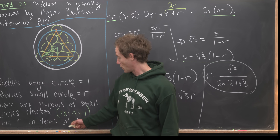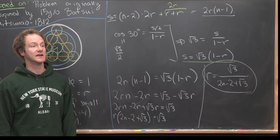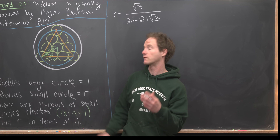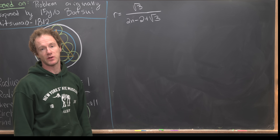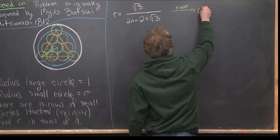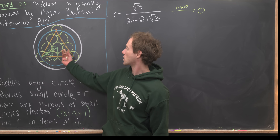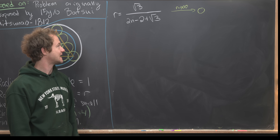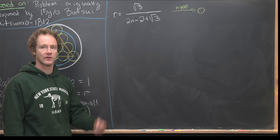So we've found r = √3 / (2n minus 2 + √3). I want to push this one more step to see an interesting observation. It's clear that as n goes to infinity, r goes to zero, because the denominator grows without bound. That makes sense — we're forcing more circles inside a fixed circle of radius 1, so the small circles must shrink. But something interesting to look at is the total area of all these circles in the limiting case as n goes to infinity.